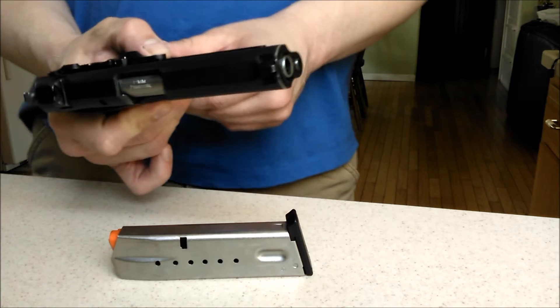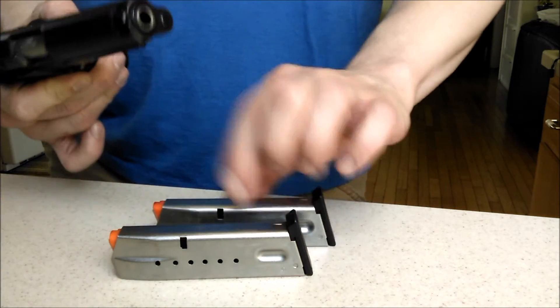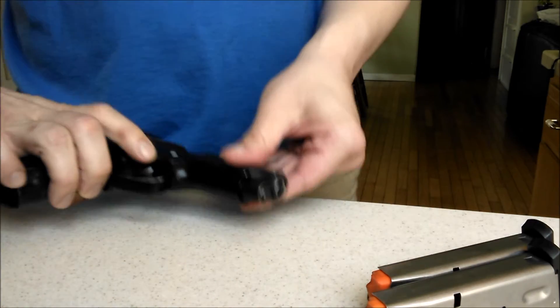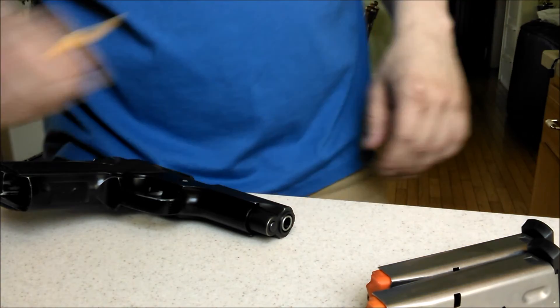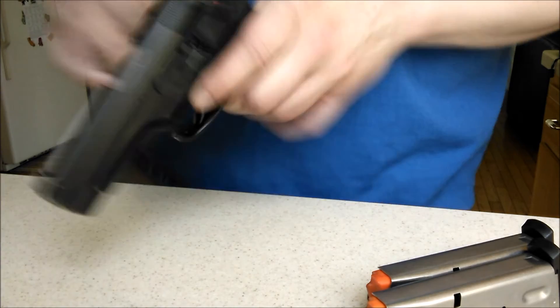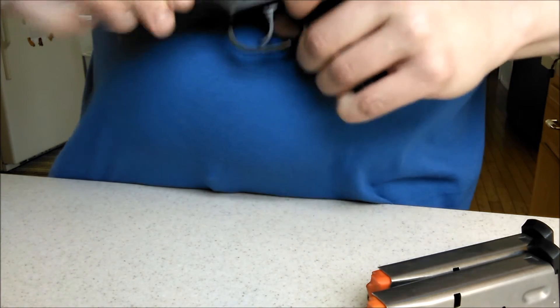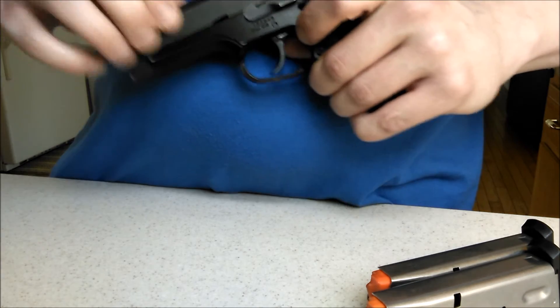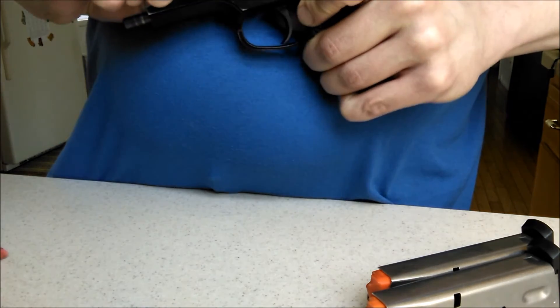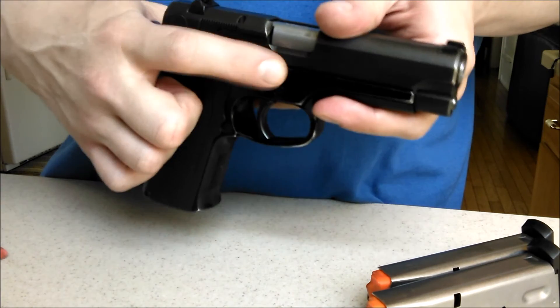Taking this thing down is kind of a pain too in comparison to a lot of modern pistols. I'm going to take this thing down really quick. You need something, some sort of hard object. I've got a pencil here. What you've got to do is line up this notch right here with the round part of this pin. Now, while it's lined up, come from the back and push this through.